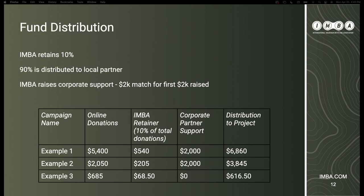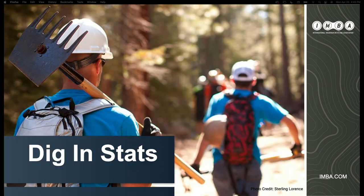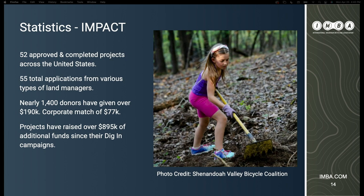IMBA collaborates with partners to put as much money as possible toward local trail efforts. No matter what, the first $2,000 raised on our Dig In platform is matched by Shimano for each project. Since launch in 2020, we've had five rounds of Dig In with 52 completed and approved projects. Nearly 1,400 donors have given over $190,000, resulting in $77,000 in corporate matching support. Projects that completed Dig In have gone on to leverage $895,000 in additional support for trails.